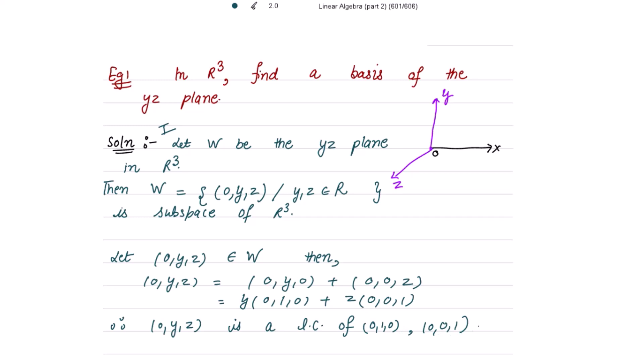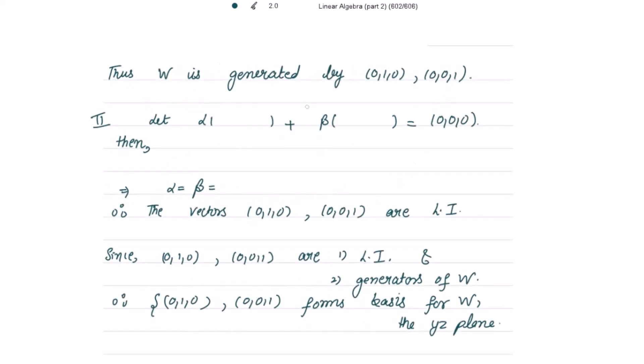There is no need to use scalars alpha and beta to find values — we can directly see that (0, y, z) equals this linear combination. Since (0, y, z) is arbitrary, every element of W is a linear combination of these two vectors, which means W is generated by these two vectors.